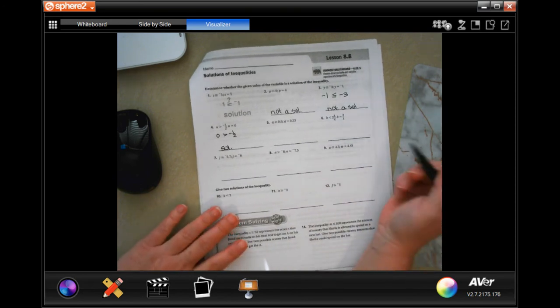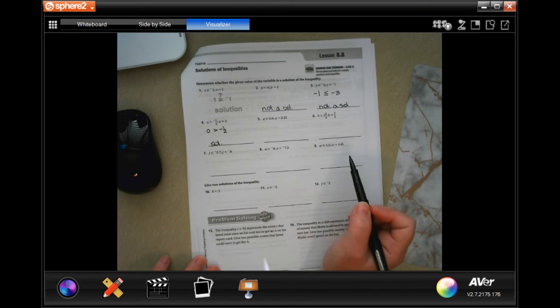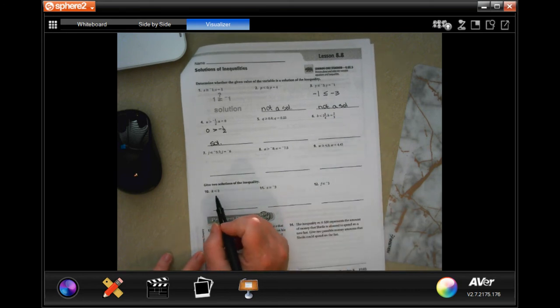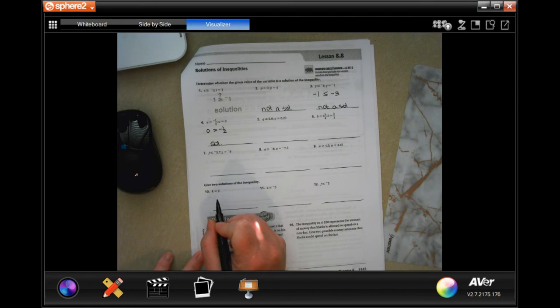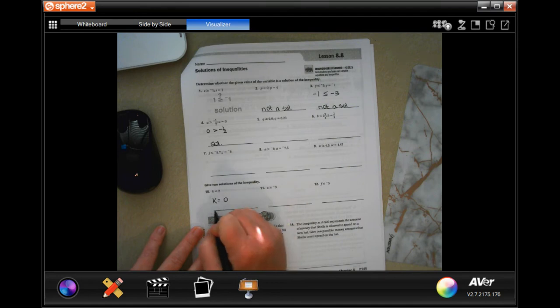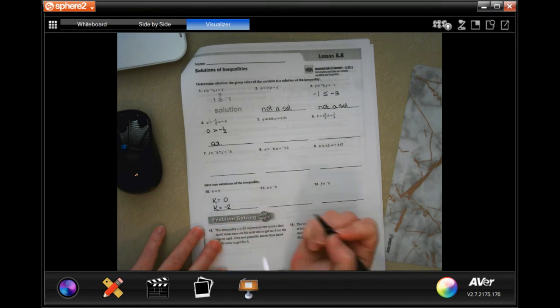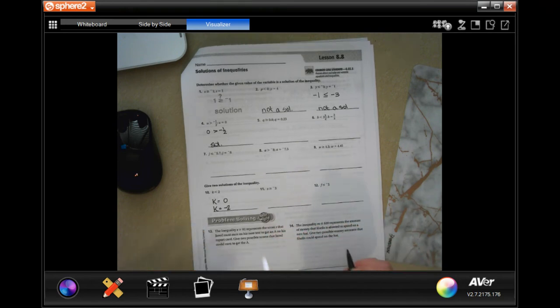You guys are going to do that through number 9. We are going to go down to number 10, and it says to give two solutions to the inequality. So we just need to find two numbers that make the sentence true. This says that k is smaller than 2, so we just need two numbers that are less than 2. So we could say k is equal to 0, or we could say k is equal to negative 2. You could say k is equal to negative 50. It doesn't matter, as long as it's smaller than 2.